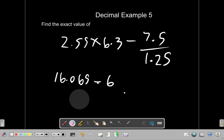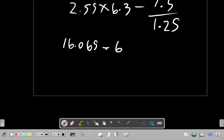6.065. All of these dots, get rid of them. So you have 16.065 minus 6.0.